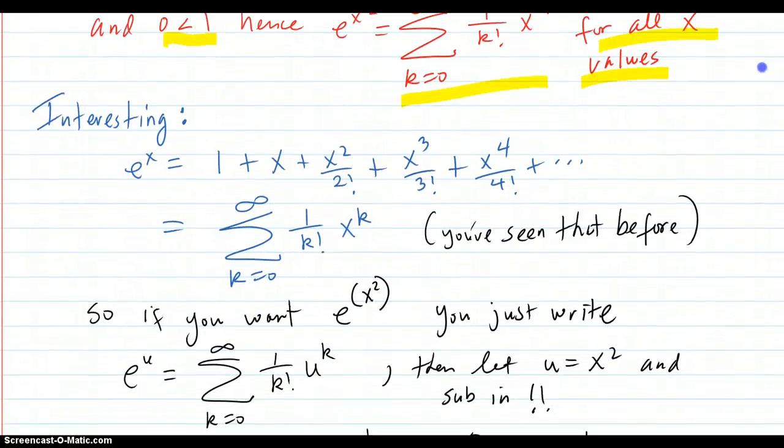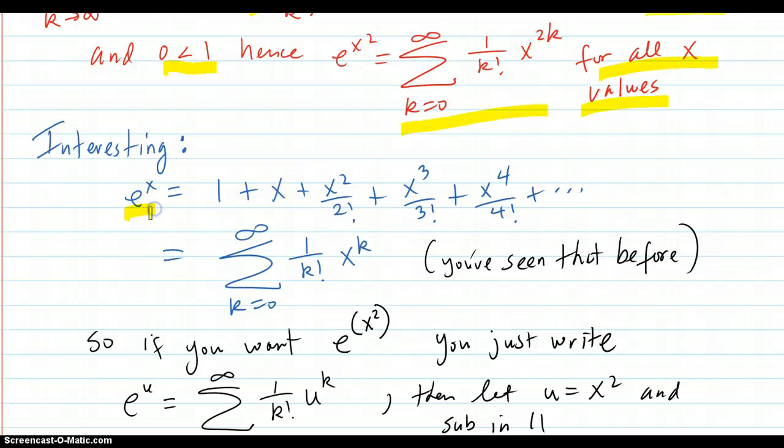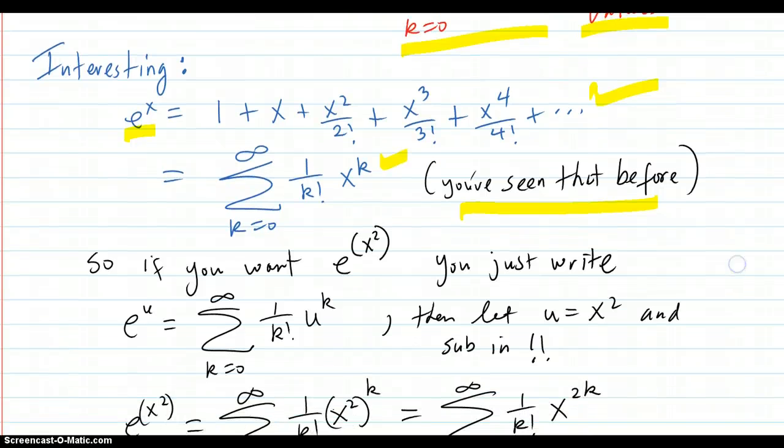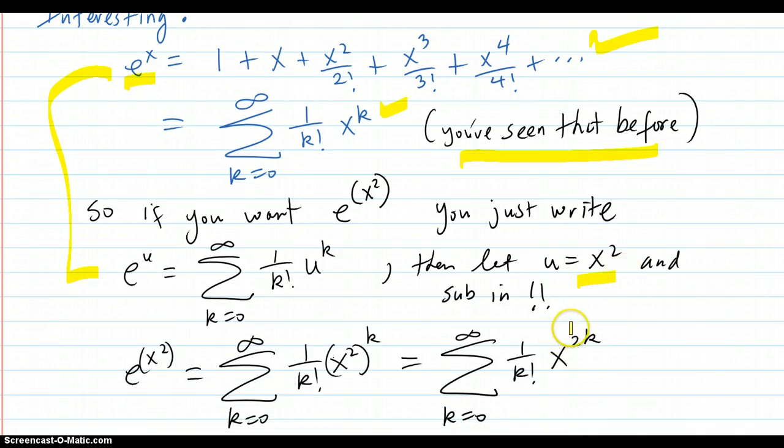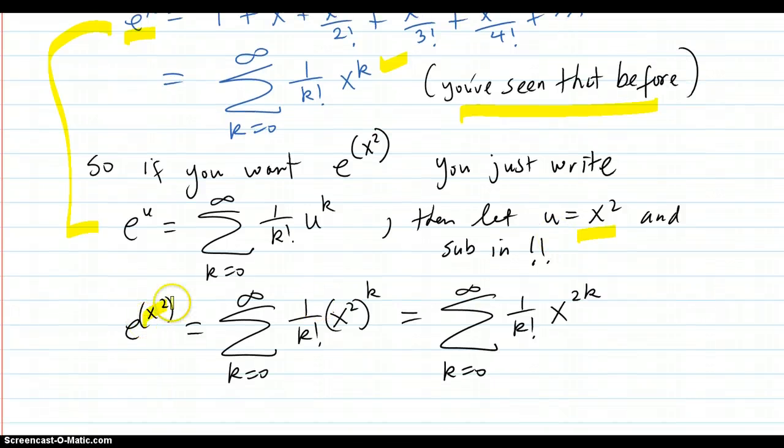Now here's an interesting idea here. The regular e to the x series that we've seen before is this. And it has this series form. So if you want e to the x squared, you just write out, well, e to any u variable is this: 1 over k factorial, u to the k. That's what e to the x is. Then you just sub in x squared for the u. That's it. Just put it in there. Put it in there for where it is. Simplify the exponent. You get this. And that's what we got earlier.